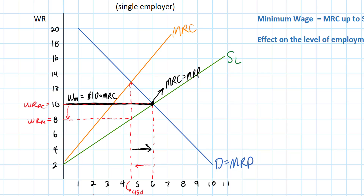So counterintuitive! In a competitive labor market, a minimum wage reduces the level of employment. However, in a monopsonistic market, because the minimum wage becomes the firm's marginal resource cost up to the point where it crosses the supply curve, the firm has an incentive to hire more workers. It can do so without having to raise the wage of additional workers.